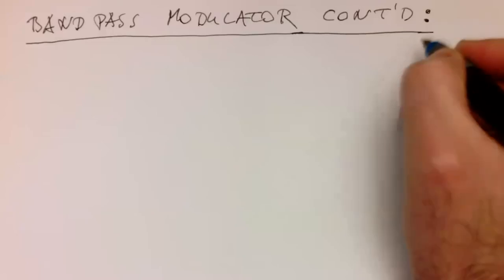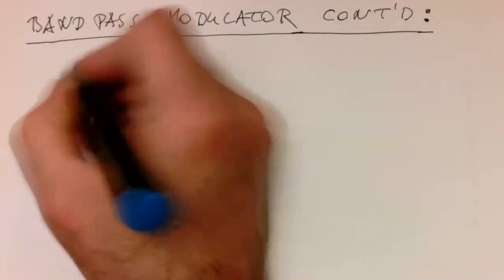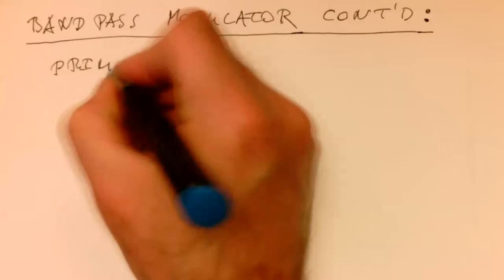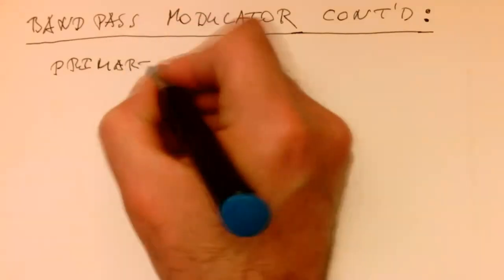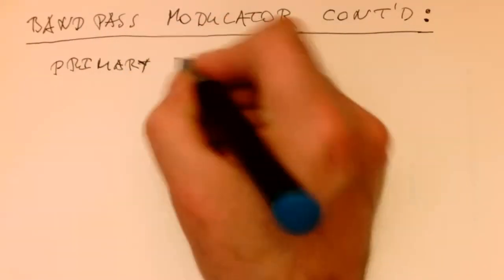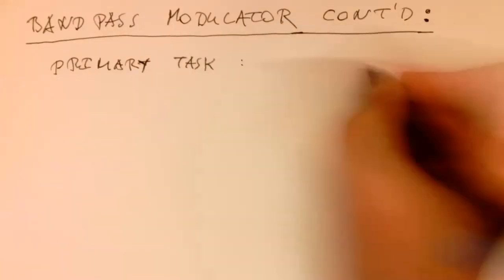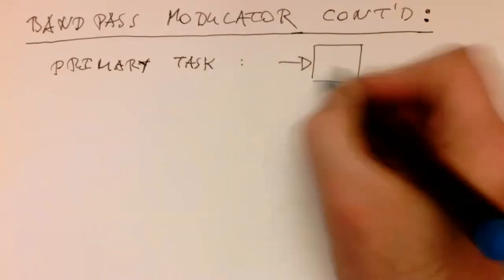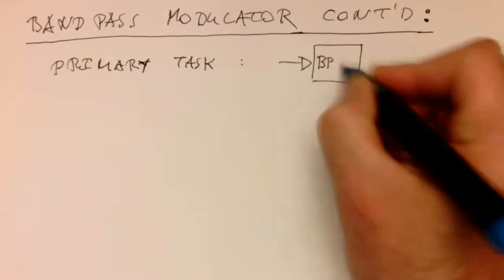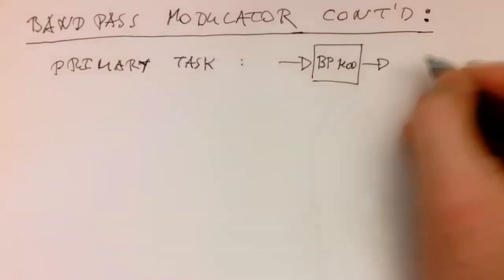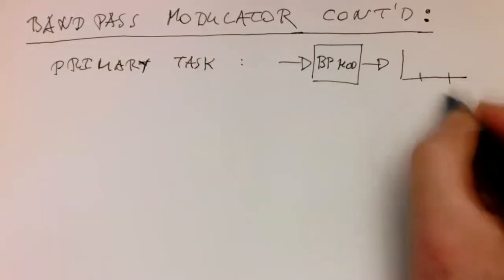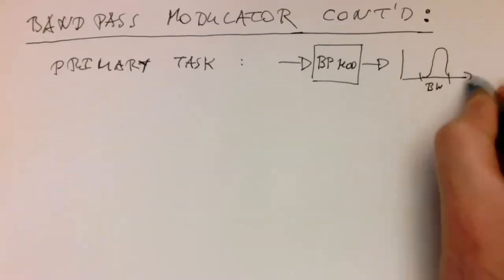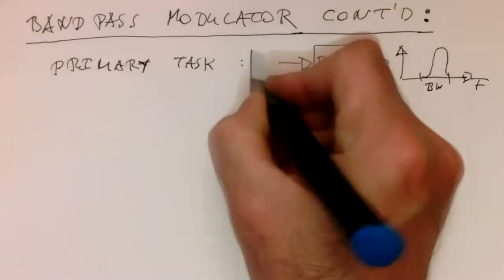The bandpass modulator, the primary task is what I've explained in the previous slide. That's our bandpass modulator that's creating this bandlimited signal here. That's our bandwidth, and this is our signal. That's frequency, and the input was our baseband.